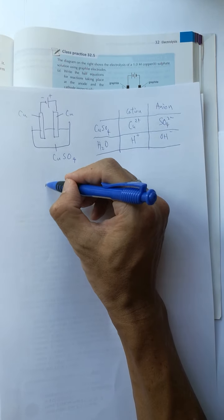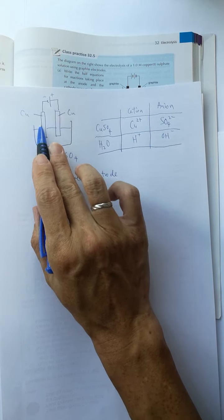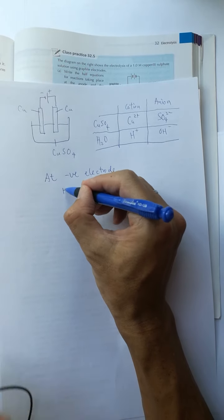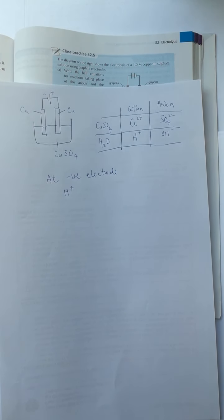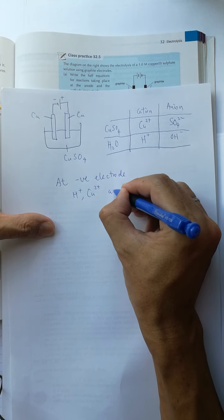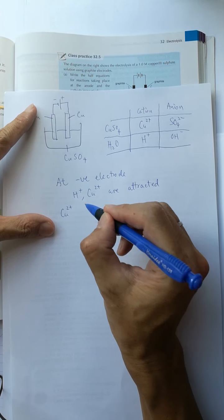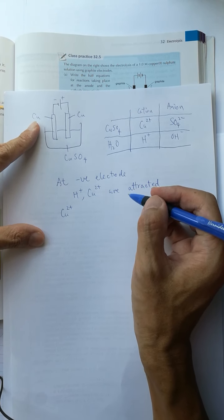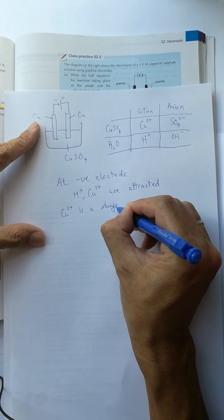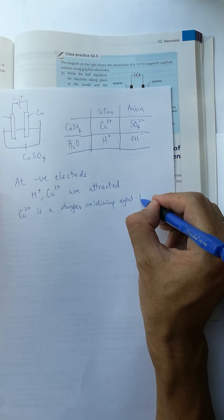At the negative electrode, two ions are attracted: hydrogen ion and copper-2 ion. The copper-2 ion is lower than the hydrogen ion in position on the electrochemical series, so the copper-2 ion is a stronger oxidizing agent than the hydrogen ion.